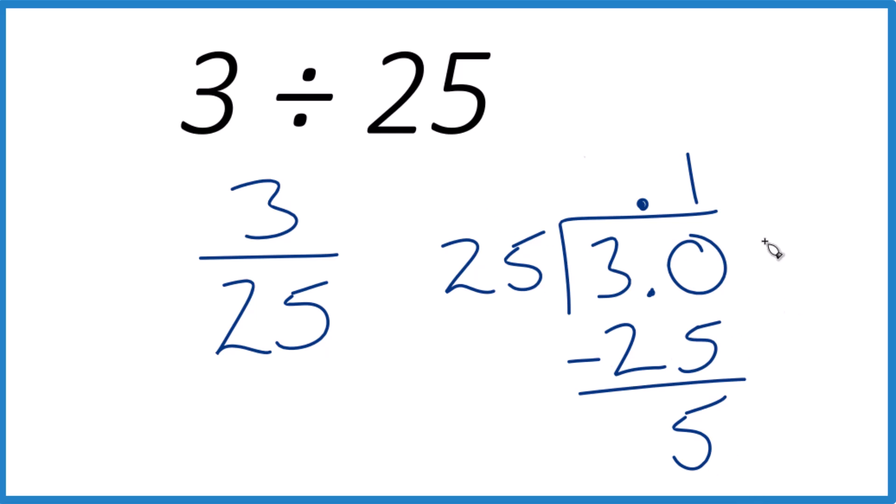And it doesn't go into 5, but I can put another zero out here because it's still 3.00. That's the same as 3. And then we need to move over one place. We can bring that zero down. 50.